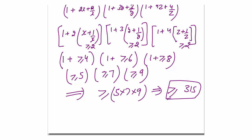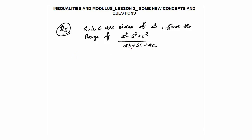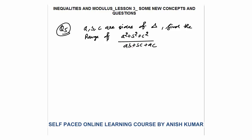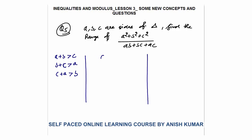Question 5 is very important: a, b, c are the sides of a triangle. Find the range of (a²+b²+c²)/(ab+bc+ca). We use three properties of triangle sides: (1) sum of any two sides is greater than the third — a+b > c, b+c > a, c+a > b; (2) the absolute difference of any two sides is less than the third — |a−b| < c, |b−c| < a, |c−a| < b.